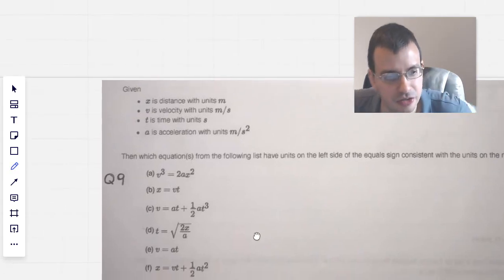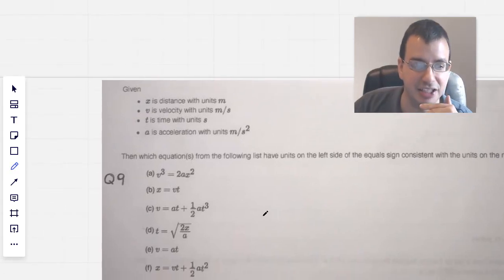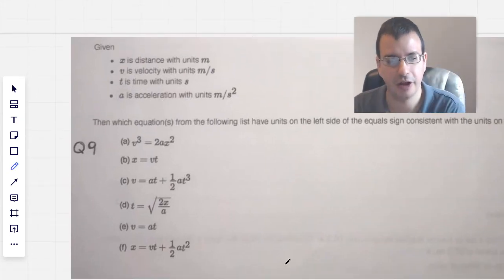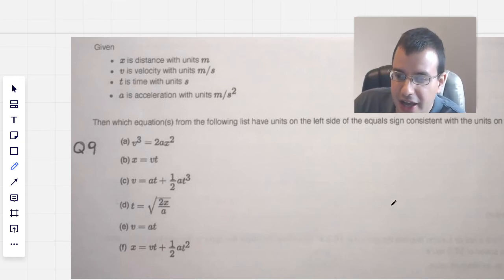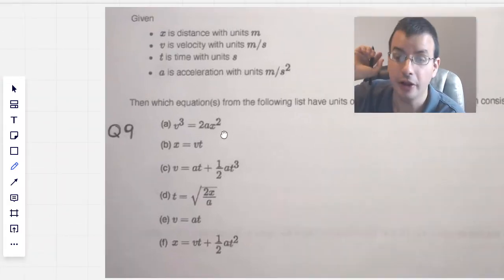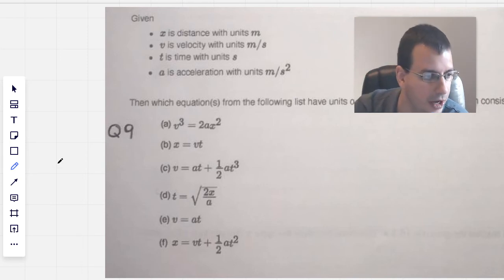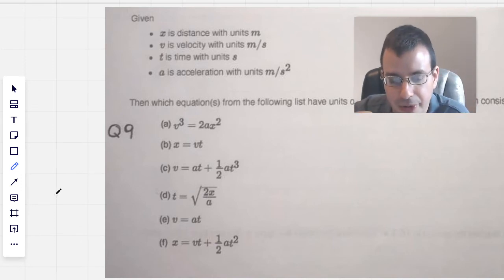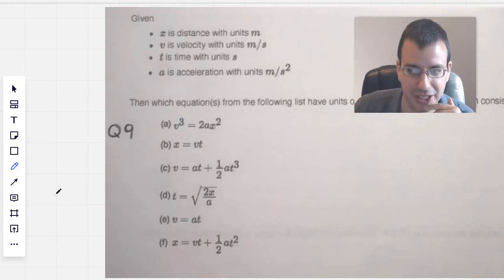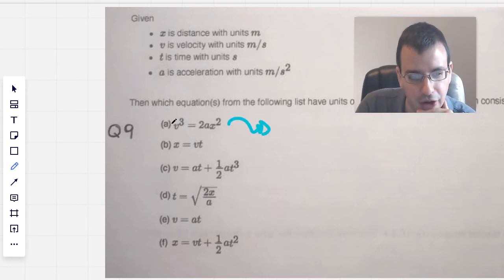Given x is in meters. Velocity is in meters per second. Time is in seconds. And acceleration is in meters per second squared. Pretty reasonable assumptions. Which of these below equations from the following list have units on the left side of the equal sign consistent with units on the right side? So which ones are possible to make sense? Okay. This is called dimensional analysis. Super useful. A lot of times in physics, especially mechanics, first couple semesters, you can pretty much just rely on this and get maybe a B, maybe a C. You can probably pass the class with minimal conceptual understanding and just knowing how to do dimensional analysis.